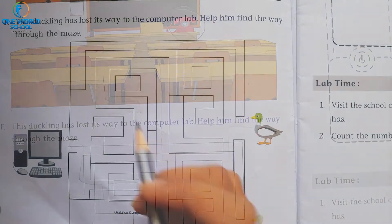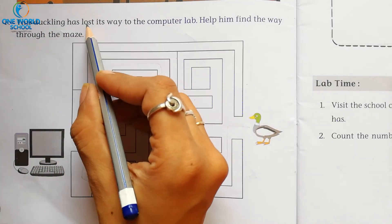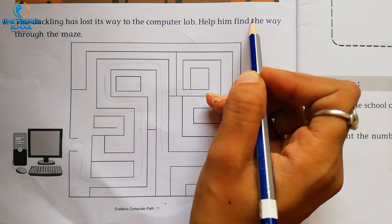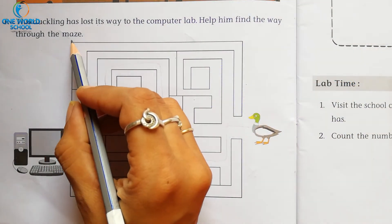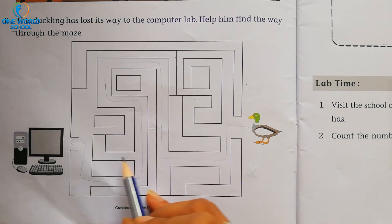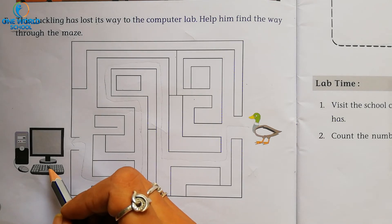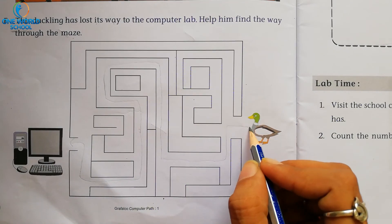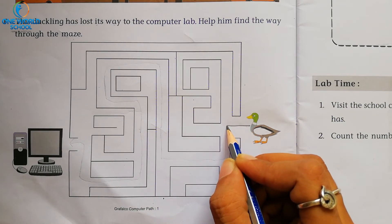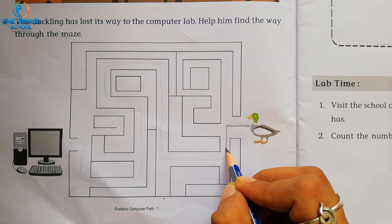Now, next question. This duckling has lost its way to the computer lab. Help him find the way through the maze. You can see a duckling here and he forgot his way. He lost his way. So we have to find out the way. We have to find the way to the computer lab. So start with here. चलो find out करते हैं. यहां से हम कहां जाएंगे. Very good.